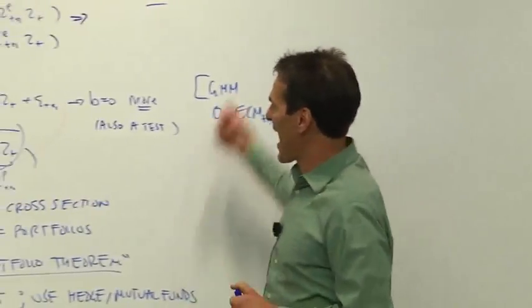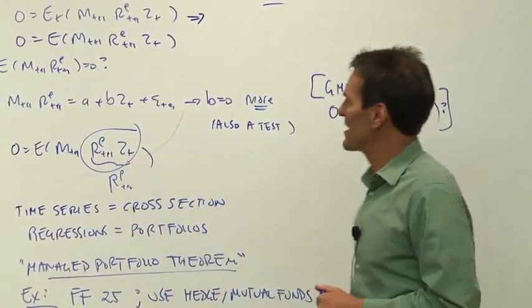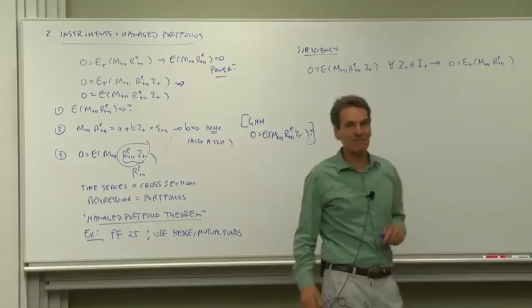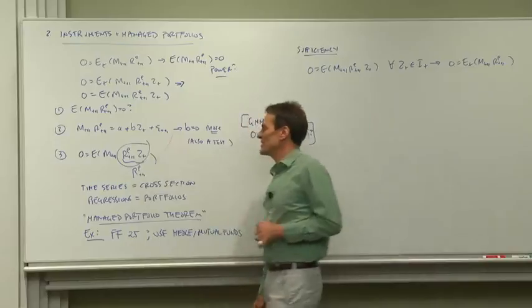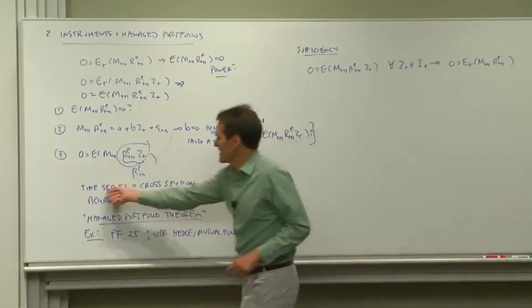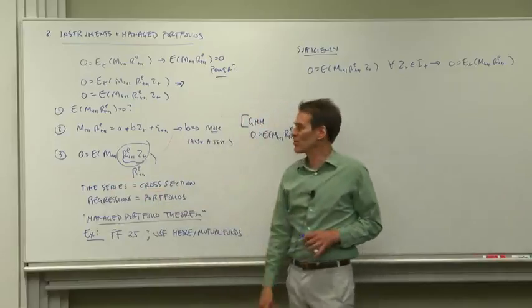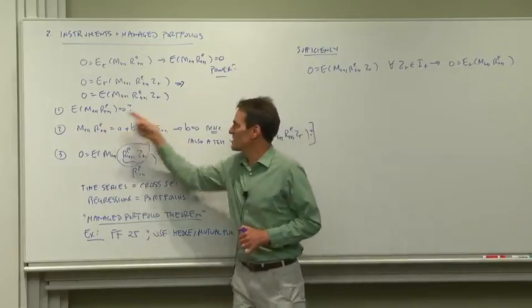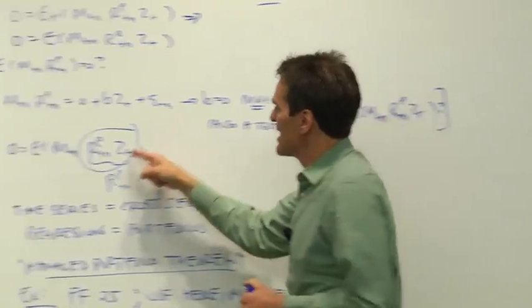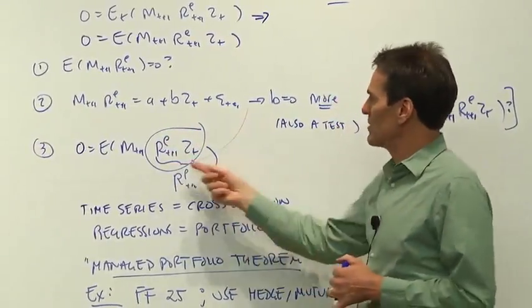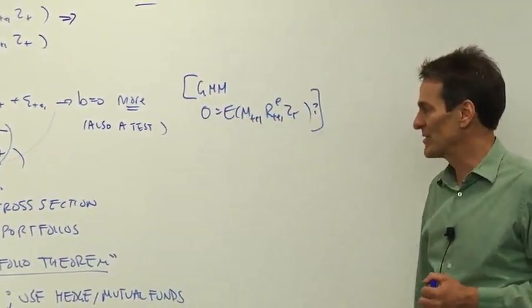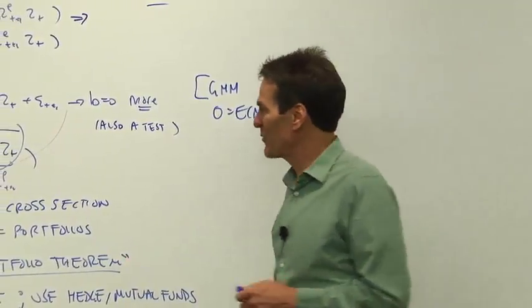And now you see that by adding instrumental variables, managed portfolios, that's just like adding more returns to the space. So this managed portfolio theorem is another beautiful uniter of the things we do. It tells us that the time series is the same as the cross-section. Running time series tests, can we forecast with regressions, is exactly the same thing as forming managed portfolios and then doing unconditional tests with the expanded managed portfolio returns, the managed portfolio theorem.